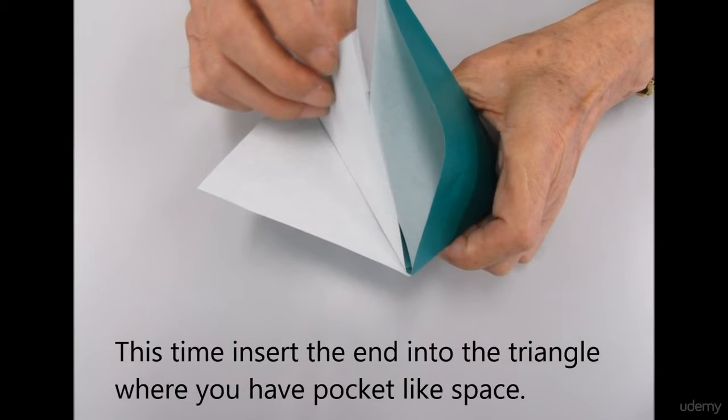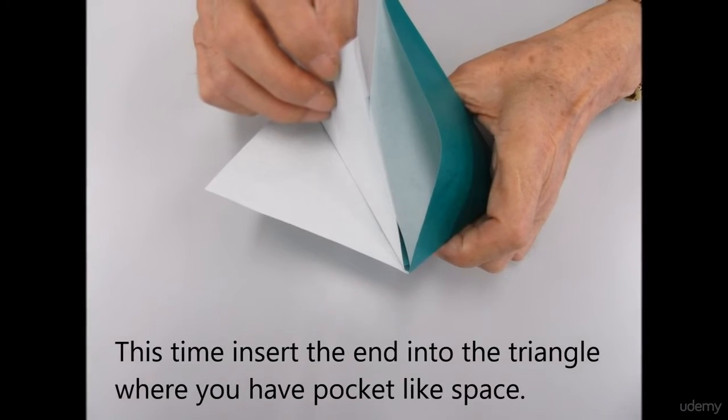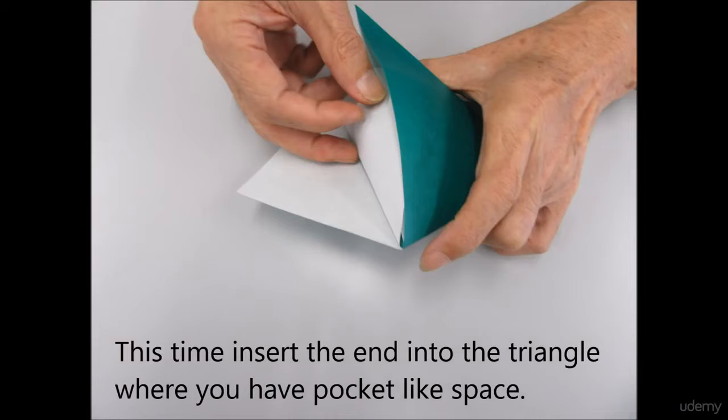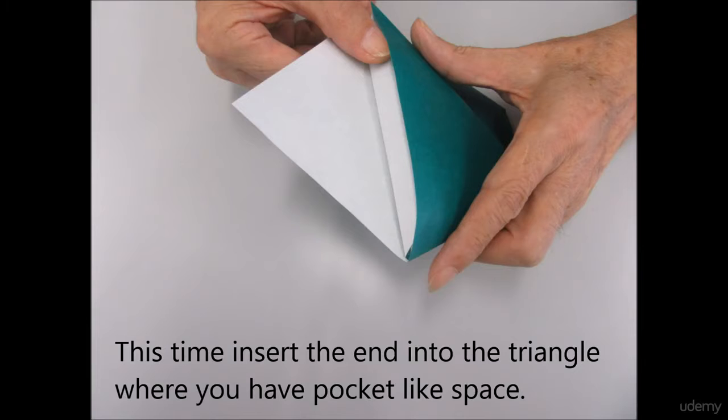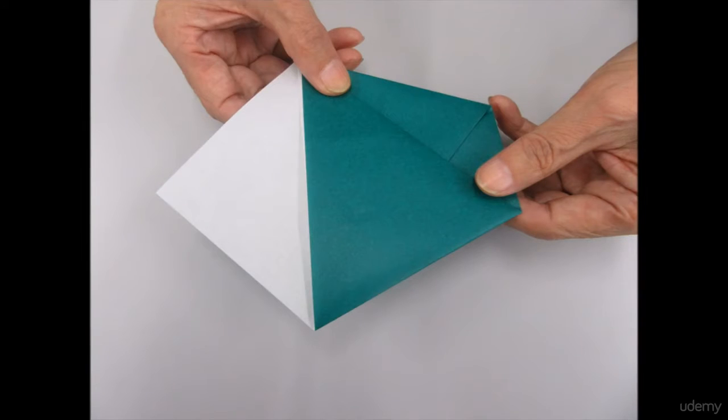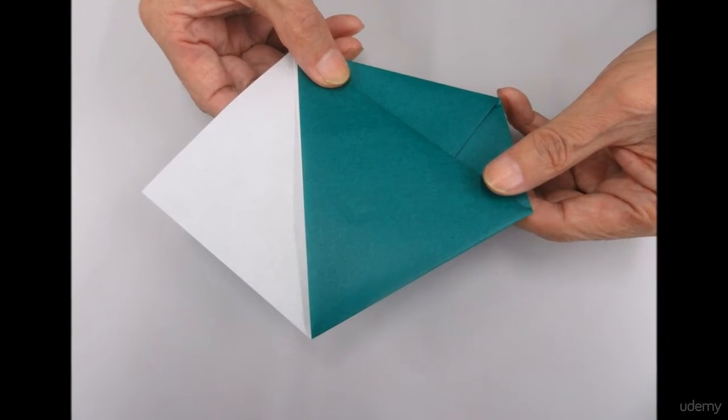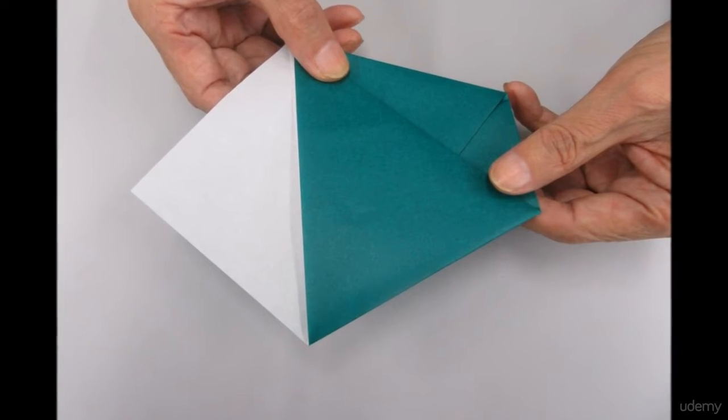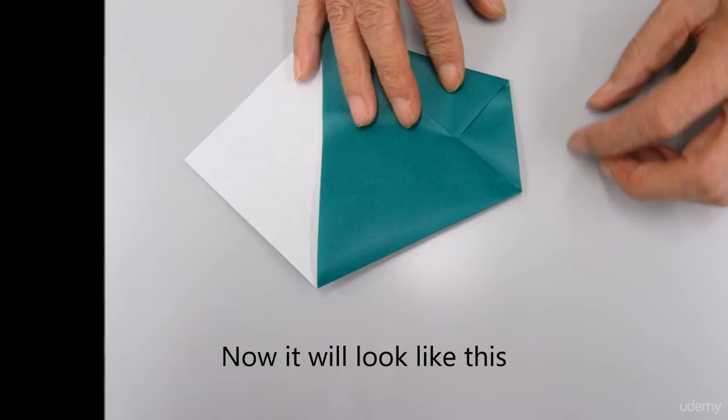Insert the end into the triangle where you have a pocket, like the space, pocket-like space. So this is the difference between a glass and the cap.